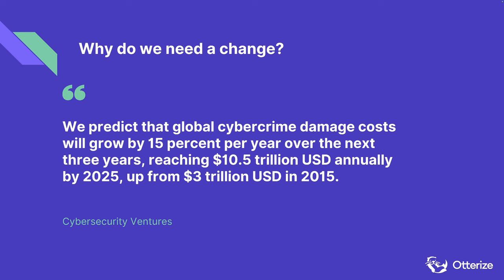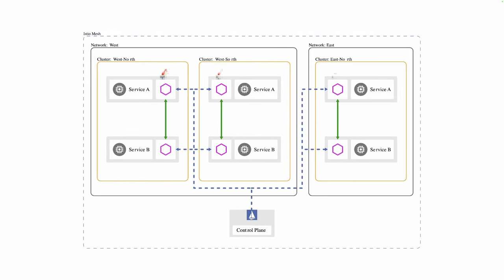Why do we need to make this change? We need to do it because if we don't, in cases of compromise because of advanced techniques — ransomware and other advanced threats — it's going to cost a lot of money. Cybersecurity Ventures stated that cybercrime damage costs will grow by 15% per year over the next three years, reaching $10.5 trillion annually by 2025, up from $3 trillion back in 2015 — basically more than tripling. This is a valid reason why we need to implement these changes. But we also need other solutions for microservices, which are much more dynamic in nature.